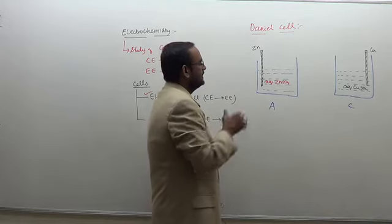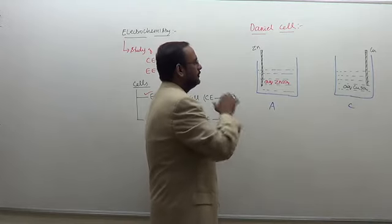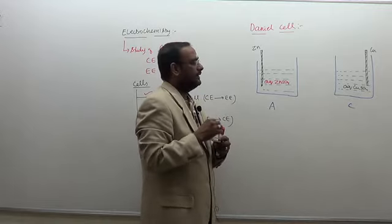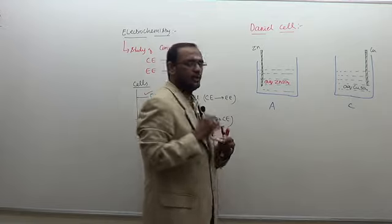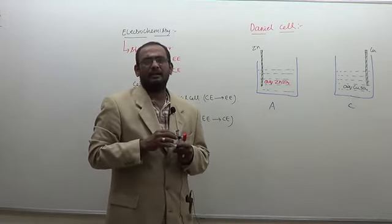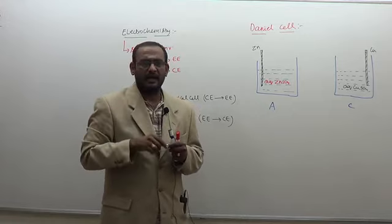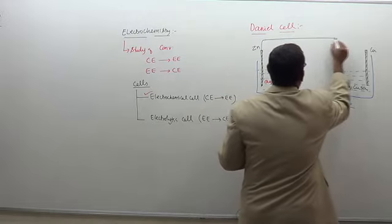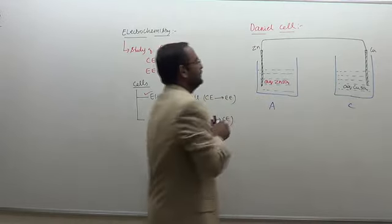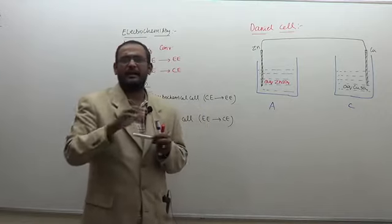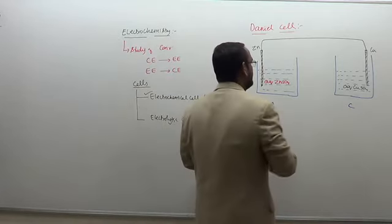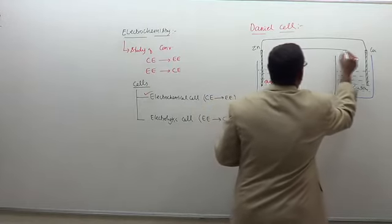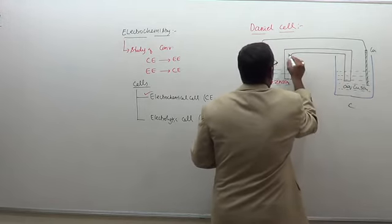This is the basic diagram for the Daniel cell. We need to close the circuit in two ways: through the electrodes and through the electrolyte. For the electrodes, we simply connect them by means of a wire — externally the electrodes are connected by a wire. Internally, the electrolytes are connected by means of a system called the salt bridge.